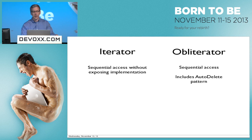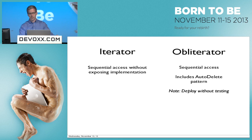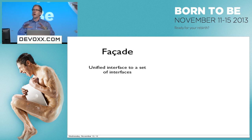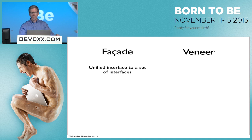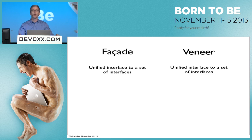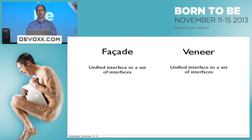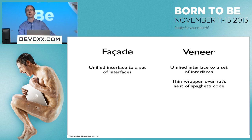The important caveat about this pattern is that you should really deploy it without testing it first. The facade pattern is very popular — it unifies a set of interfaces into a single interface that can be called. There's another trending pattern called the veneer pattern. It's actually exactly the same thing. The advantage of the veneer pattern is that it's not so difficult to type for English speakers — I don't even know where that symbol is; it's not on my keyboard. And then both of these are simply thin wrappers over spaghetti code.